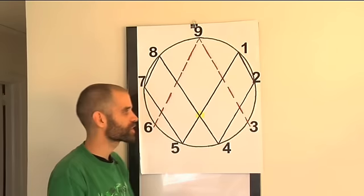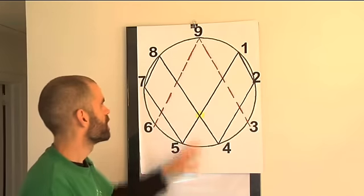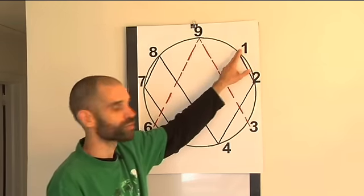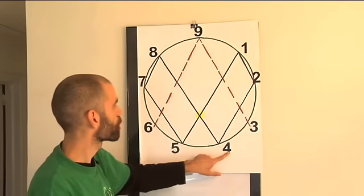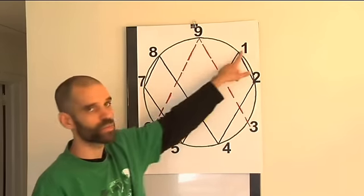But I don't want to get too stuck on that. I want to take a look at some of the other properties of my symbol. Now, here I've talked about six numbers, one, two, four, eight, seven, five, back to one.